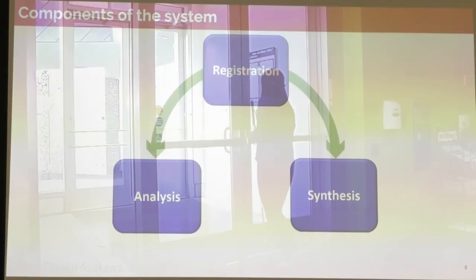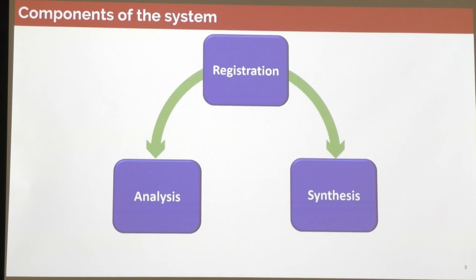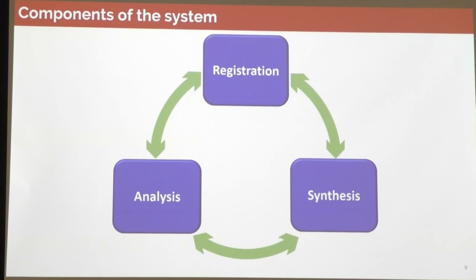If you want to build a system like this, you need three components. First, you need registration — finding where the face is on the image and tracking it over time. When you have that information you can use it for analysis and also for synthesis. But these three components are not linear dependencies — they interact with each other. You can use synthesis to improve registration, and synthesize more data for domains your dataset does not cover.